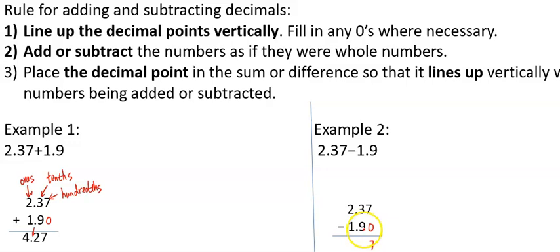And 3 minus 9, it's not enough. So we're going to borrow from the 2. If we borrow 1 from 2, that's going to reduce 2 down to 1. When we borrow 1 from this 2, it's going to be adding 10 to the 3 because this place value of 3 is 3 tenths, and the 1 equals 10 tenths.